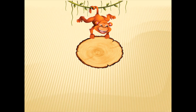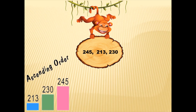Let's play with numbers now. We have the numbers 245, 213, and 230. We have to arrange them in ascending and descending order. Remember, ascending order means small to big. So we begin with the smallest number here, which is 213. The next number is 230, and then we are left with 245. So that's how the ascending order is arranged.